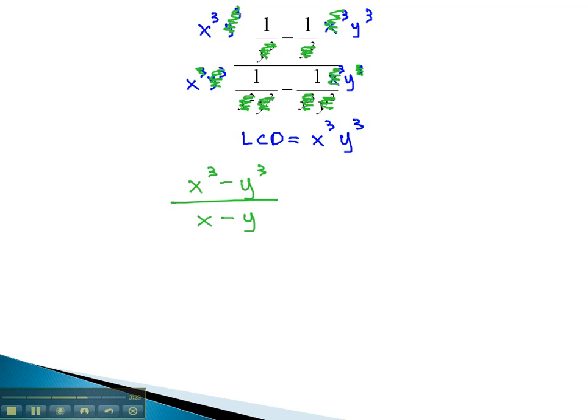We cannot divide out an x and a y, and get x squared minus y squared, because they are not factored.